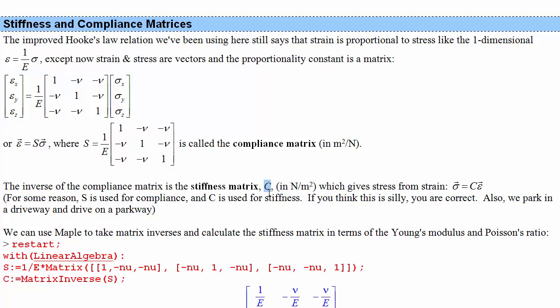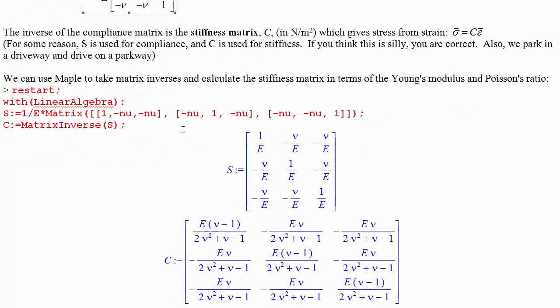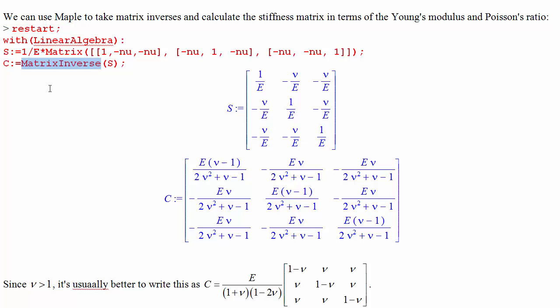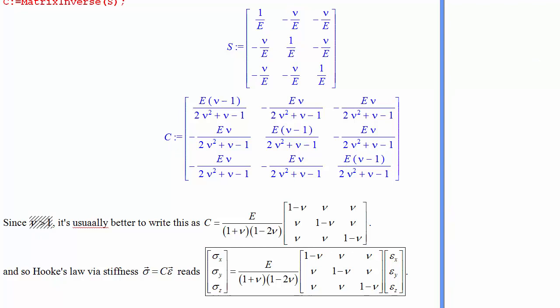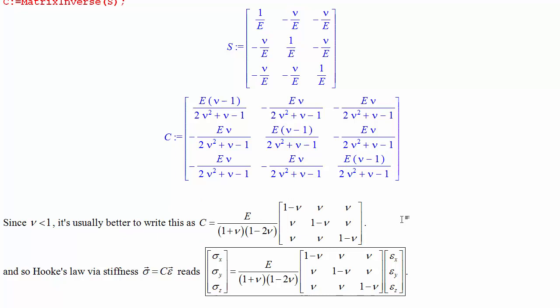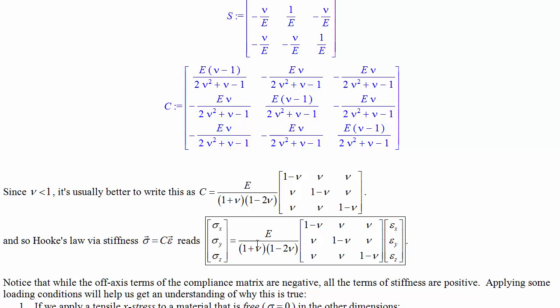Let's calculate the stiffness matrix by inverting the compliance matrix — you can use Maple to do that. The result can be rewritten more cleanly since nu is less than 1. Here's how you'll see the stiffness matrix written. If you have the strains and want to solve for the stresses, you can multiply by this matrix rather than solving three equations in three unknowns.